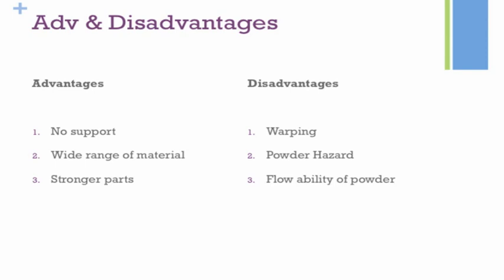Another advantage of SLS technology is that it usually provides a stronger part compared to SLA. This is because there is no polymerization process happening in your polymer — your polymer already has its specific material properties. You're just bonding the powder particles together. In contrast, with SLA you start from a resin and use the laser to polymerize and cross-link the polymer, which may result in a slightly weaker part. In SLS, the properties of your polymer are predetermined by the initial powder itself.